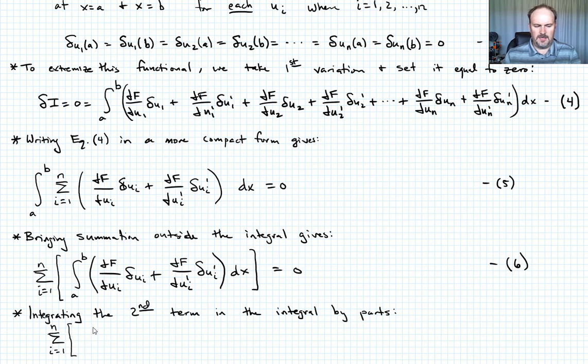That first term remains unchanged, so I'm left with integral from a to b of this quantity partial f with respect to ui, right? And then there'll be a minus d by dx term, partial f with respect to ui prime, okay? That whole quantity times delta ui dx, right? So there's an integral term.